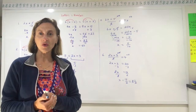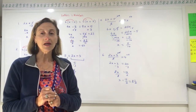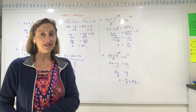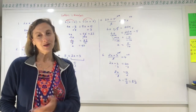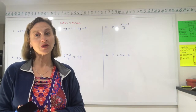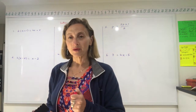I hope you're starting to feel a little bit more confident with equations. I want to give you a couple more that are all a little bit different, but I want you to always remember the rules. If you follow the rules, you will always get the answer correct — unless you just make a silly mistake, in which case we just have to try to be careful. Rule number 1: always get rid of the denominator first. Rule number 2: expand and simplify if possible. Rule number 3: move everything around to get the letters on the left and the numbers on the right. And rule number 4: always divide last.